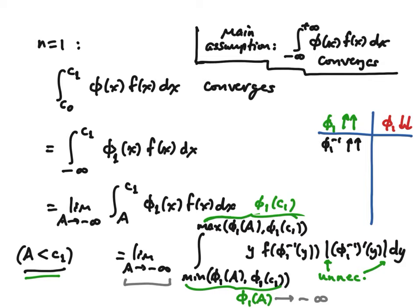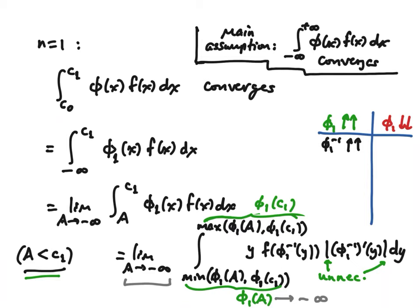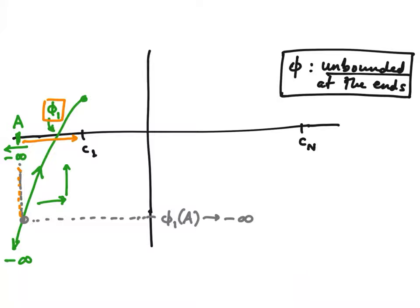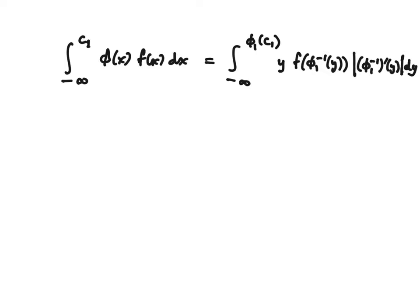So this lower limit is going to minus infinity as a goes to minus infinity, because we assumed for our class of nice functions that it doesn't have horizontal asymptotes at the ends — it's unbounded at both ends. In that case, we're just going to have an improper integral. After taking the limit as a approaches negative infinity, this lower limit will have approached negative infinity, and the upper limit doesn't depend on a. So we're just going to get an improper integral.